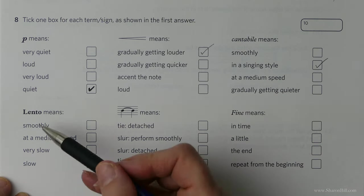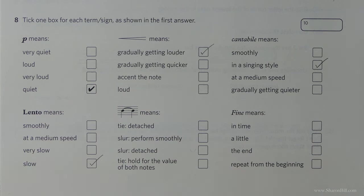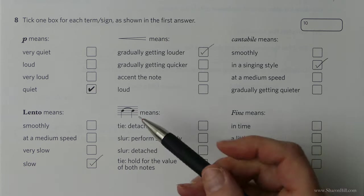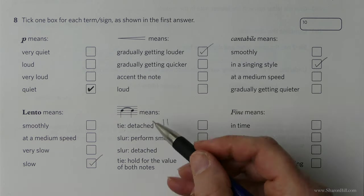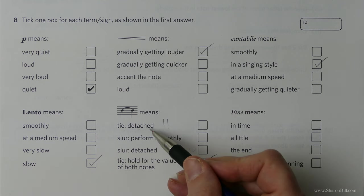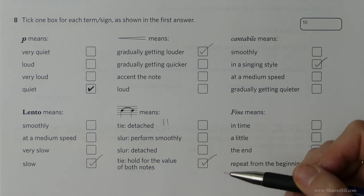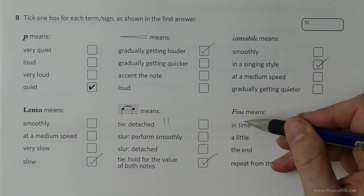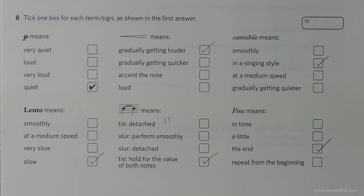So here we go. Now lento is a tempo, a speed direction, and it means slowly. Similar to largo. And then here, now watch out you don't get thrown off course here. That is a tie, but tie does not mean detach. That's really sneaky. Don't let that throw you. You know that a tie means that you hold the notes together. You add the note values together. So just be careful. You don't skim the questions and get thrown off course there. That's quite sneaky of ABRSM, but I guess that's the point. Just make you read the questions carefully. Fine means end. After you've done a repeat, if you think finish, you can see the root word quite easily there. So a little bit of revision. Test yourself and you'll soon get to grips with those performance terms.